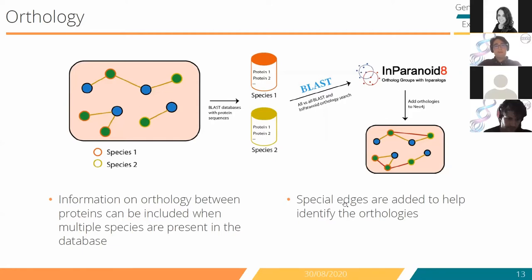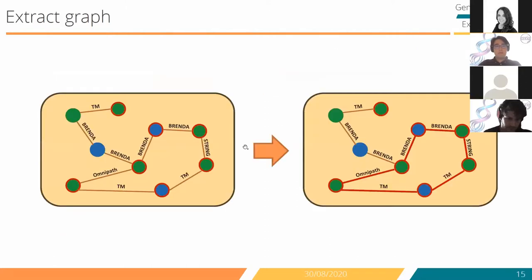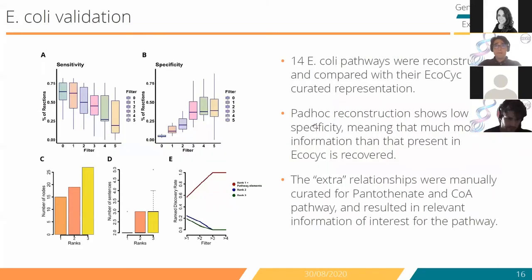After all the information has been included in Neo4j, PADOC retrieves the pathway using Cypher queries, which extract the proteins and metabolites and the relationships connecting them. These Cypher queries are a non-SQL programming language that also allows setting filters such as the number of times each entity has been recorded in text.